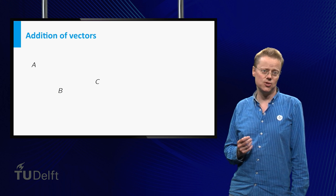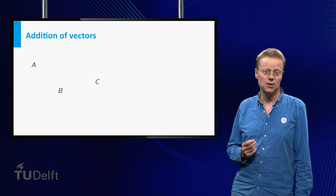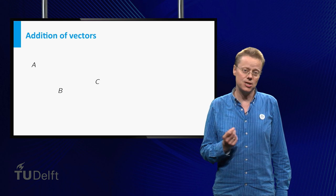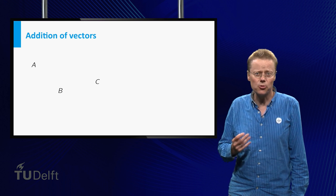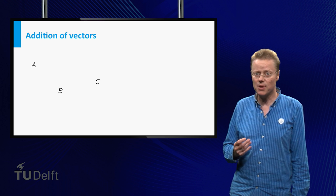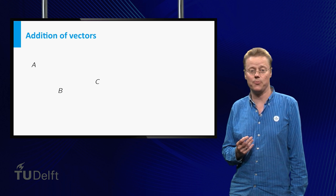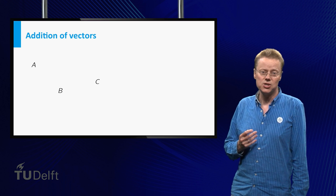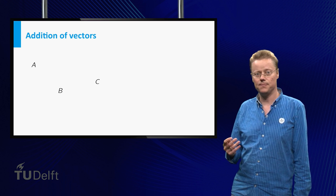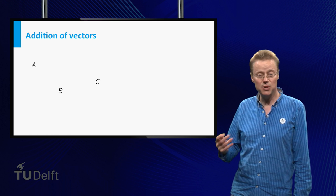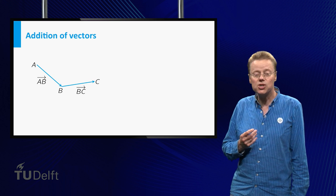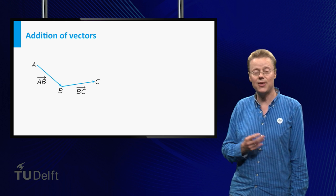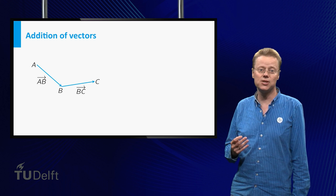There are various operations that can be applied to vectors. In this video we consider two of these: scalar multiplication and addition. We start with addition. These operations can be viewed from a geometric point of view as well as from an algebraic point of view. We start with the geometric view. Consider three points in the plane: A, B, and C. Construct vectors AB and BC. The sum of these is then obtained by following the two arrows — first AB and then BC — which gives you AC.